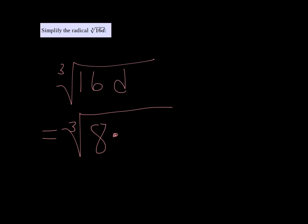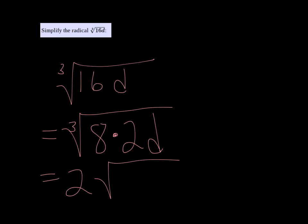So I'm going to break down 16 as 8 times 2, and then this cube root of 8 can come out — cube root of 8 is 2. What's left is the cube root of 2d.